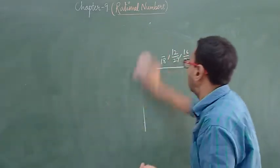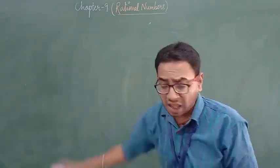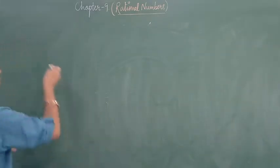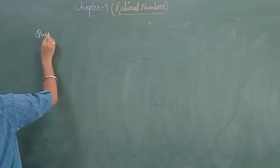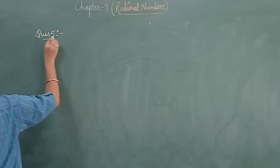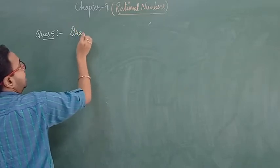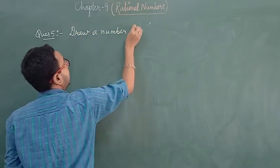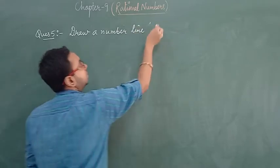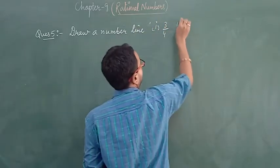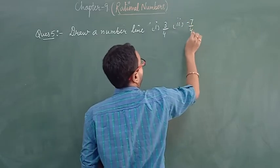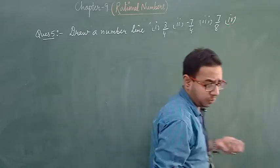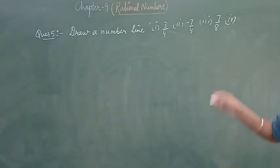Let's do question number 5. We have to draw a number line and represent 3 by 4, minus 7 by 4, 7 by 8, and minus 5 by 4.